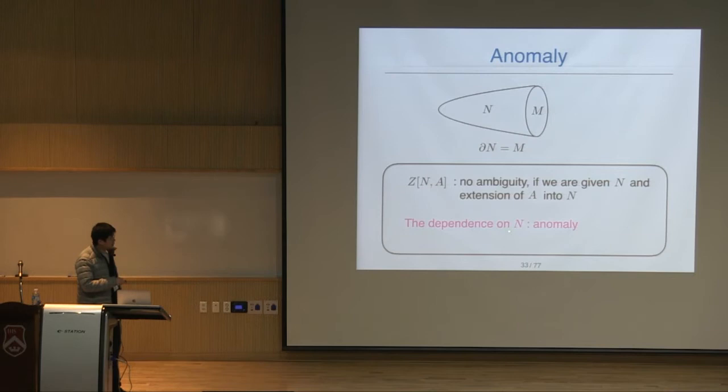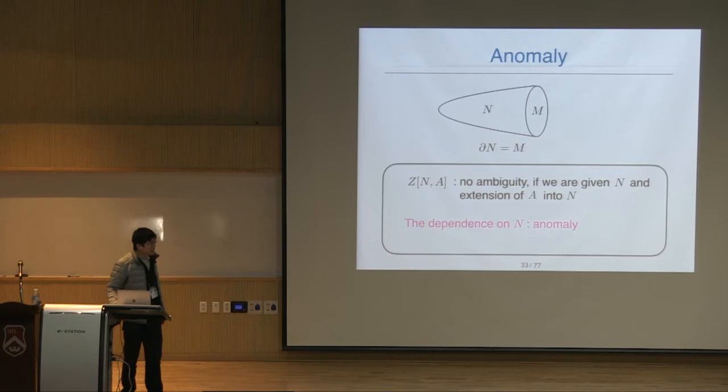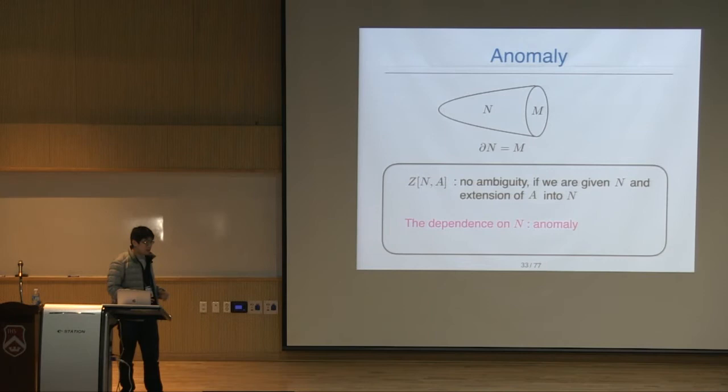A question was raised about whether it is always possible to extend M to such an N. It is not always possible, and in that case there are additional ambiguities. But these additional ambiguities have a physical interpretation — as a theta angle. There is some physical interpretation also in that case.